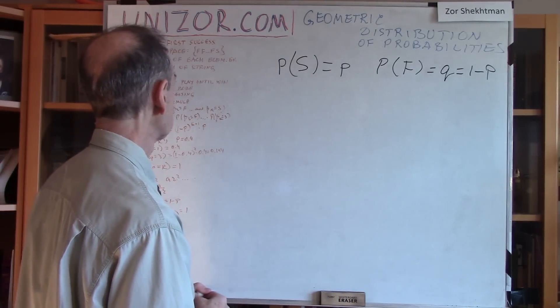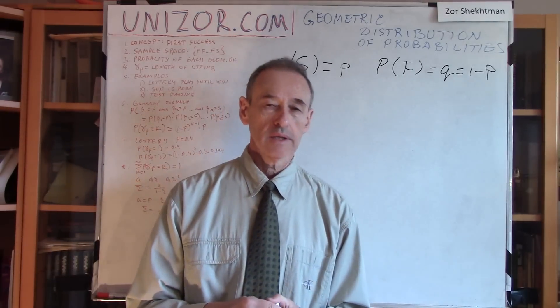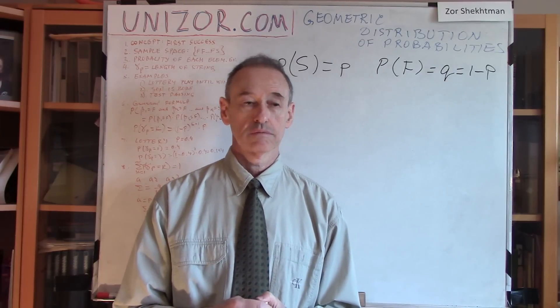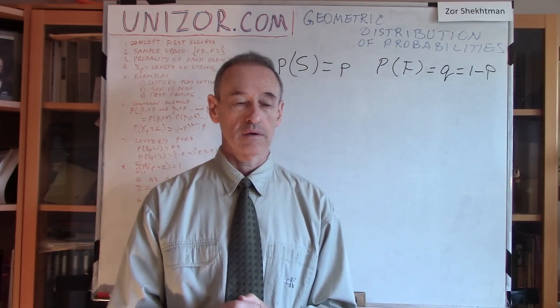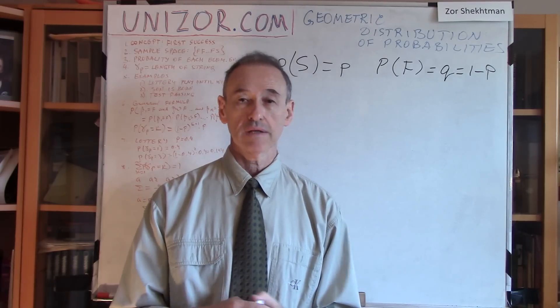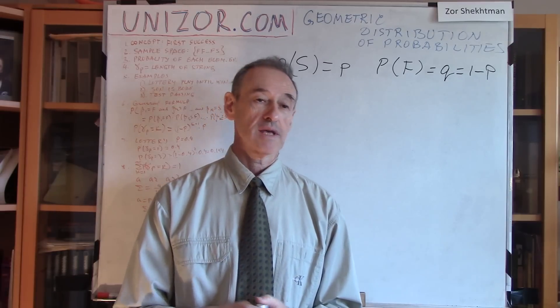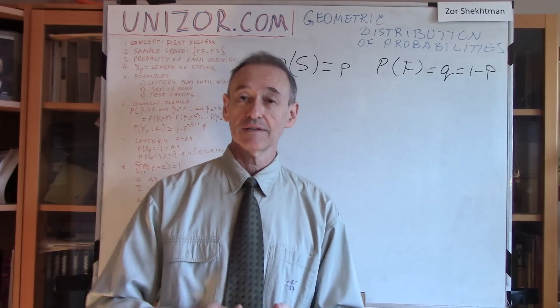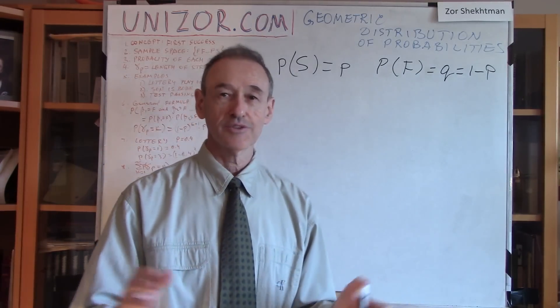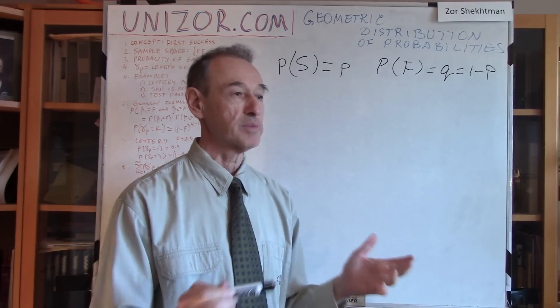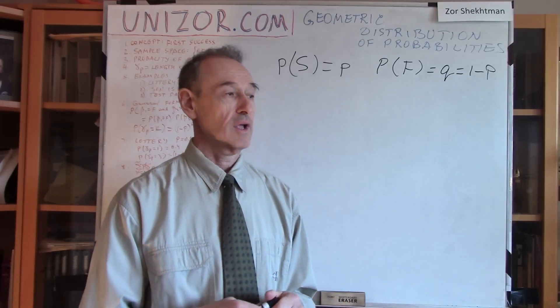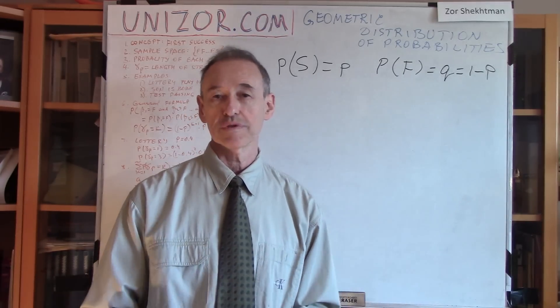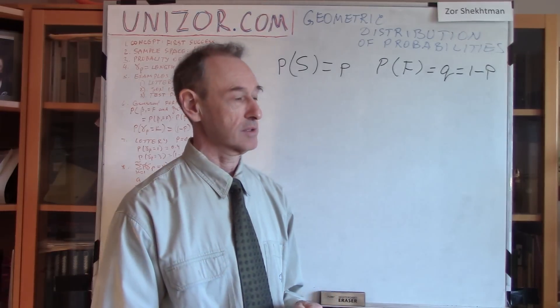Now, another example. Let's say a family wants to have a daughter. So they try and, well, all of a sudden, it's a son. Well, they say, okay, we do want a daughter, so let's just try again. So they try again. Well, if it's a son, they try again, until they have a daughter. Well, if the probability of having a daughter is greater than zero, then, well, eventually, the daughter will be born, and that would be the end of this trial, this experiment.